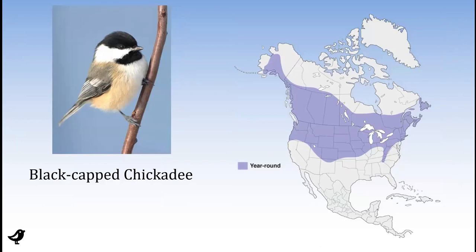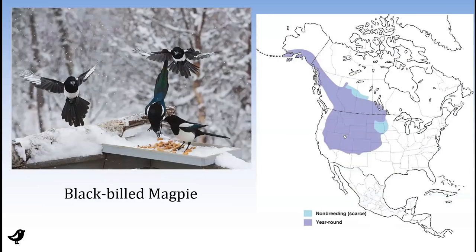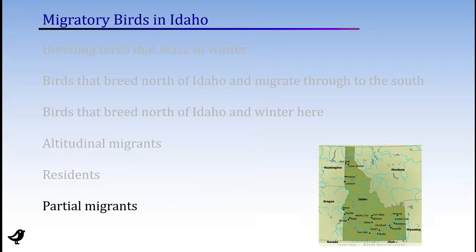The black-capped chickadee is another resident — these guys are able to make a living in my yard, my neighborhood, around the valley all year round; you can see and hear chickadees any time. The black-billed magpie is similar — a little bit of non-breeding range where they move out of the northern and central prairies, but mostly these birds are just staying put and don't seem to have any need to move somewhere else during the winter. Finally, just a couple of species of what I call partial migrants.